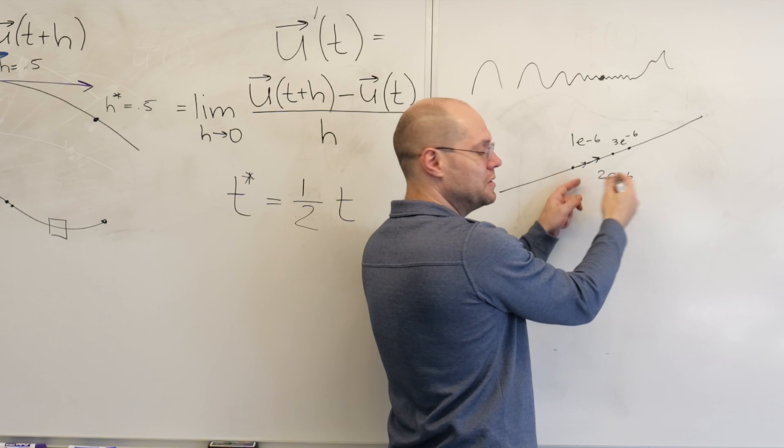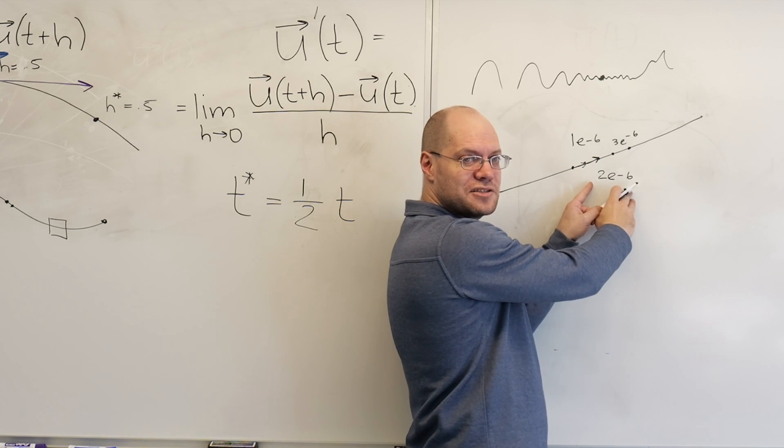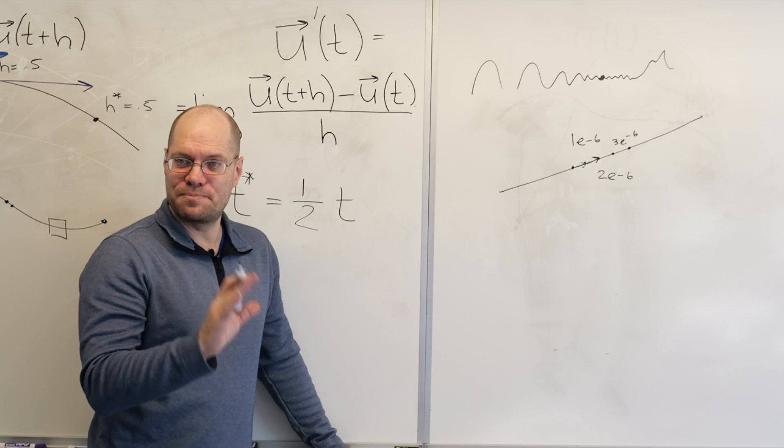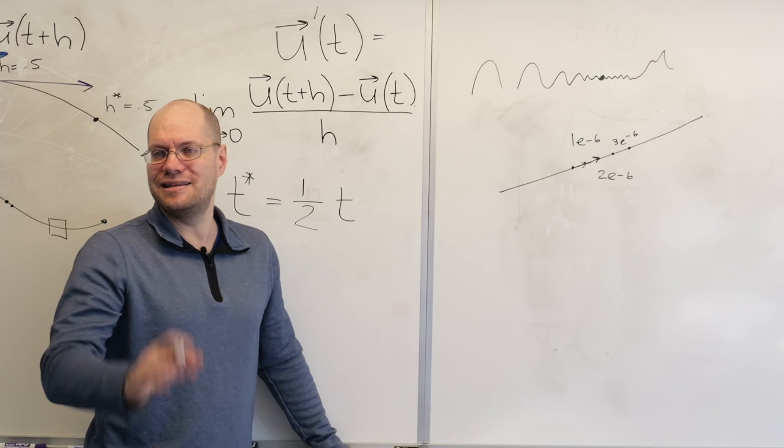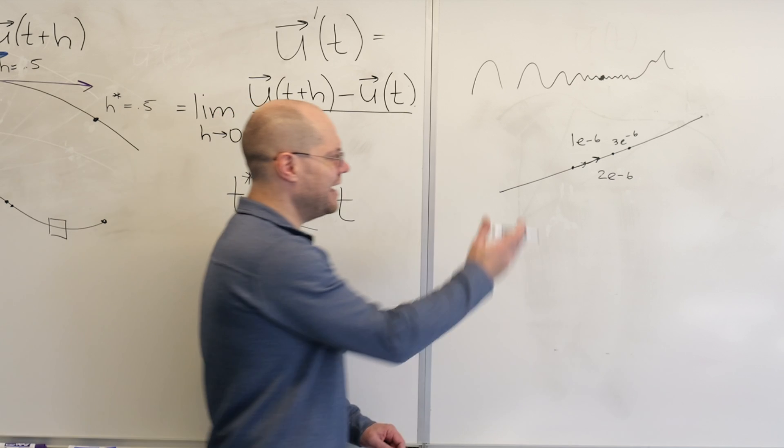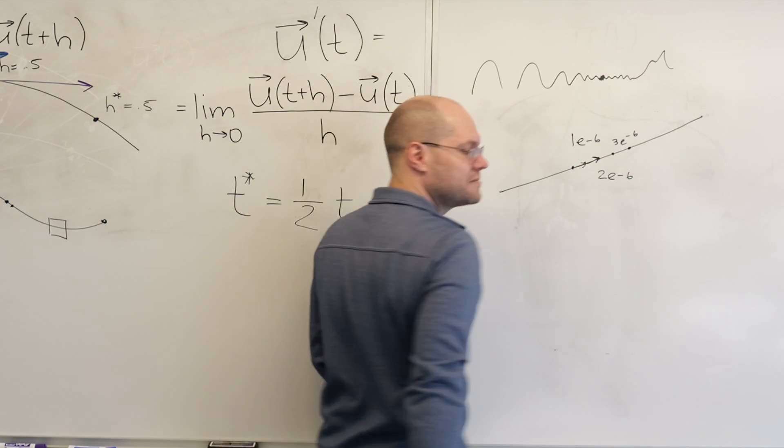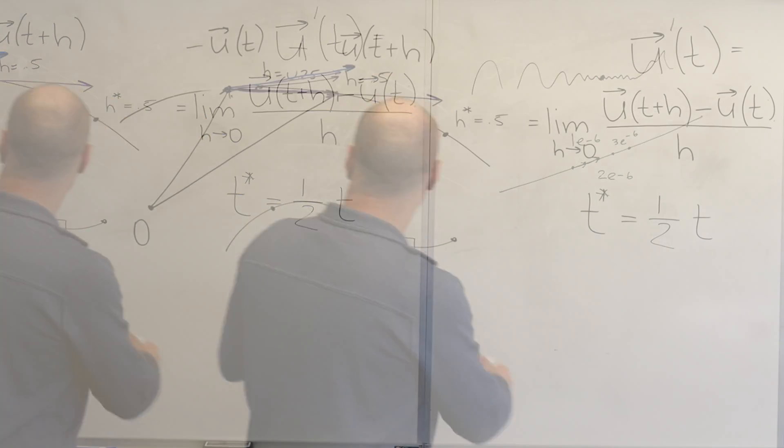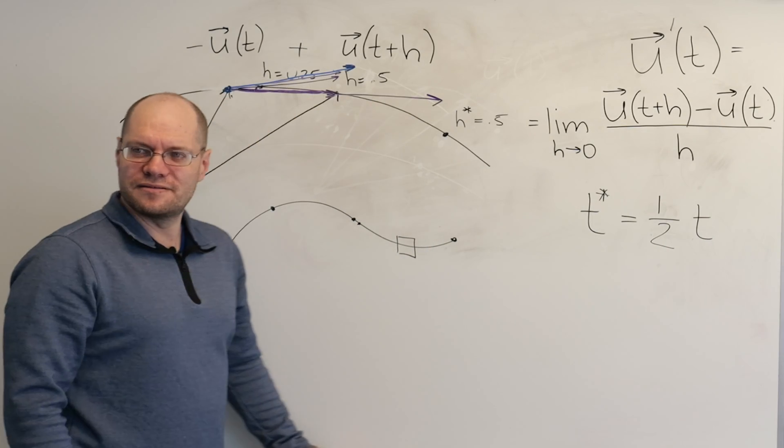And then when you do this thing, right, the difference is twice as small. But what you're dividing by is also twice as small. So it will be the exact same vector. So yes, it does approach a very nice and clean limit. Right? And it points along this straight line. Which we understand to be the tangential direction.